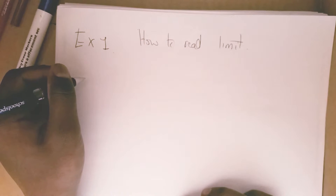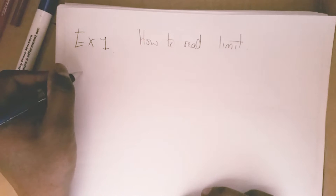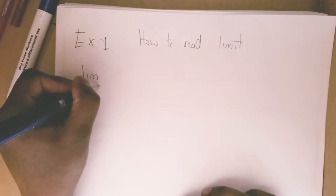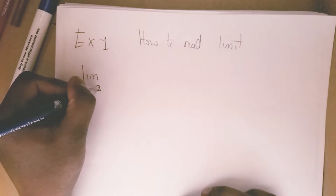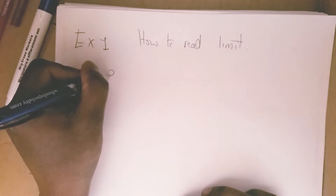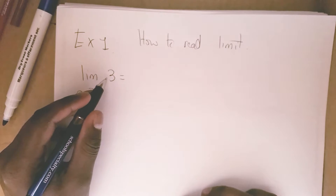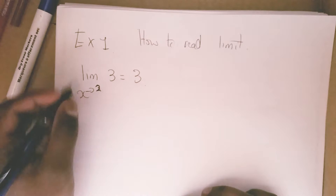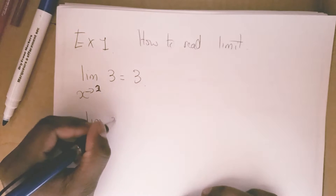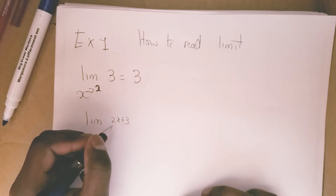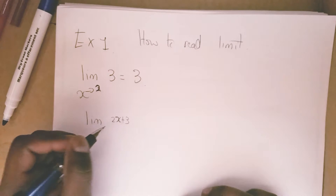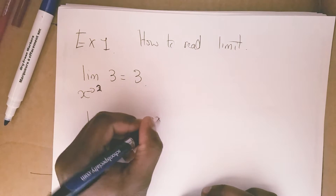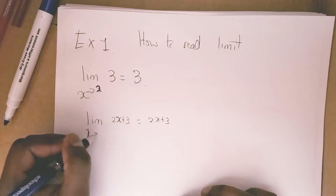This is showing you how to read limits. So if you have a limit as x approaches 3, or when x approaches 2, the limit is 3 — that's what this means. When you write a function like the limit of 2x plus 3, you don't know what the value is there, so you solve it. This tells you the limit of 2x plus 3 as x approaches 2.